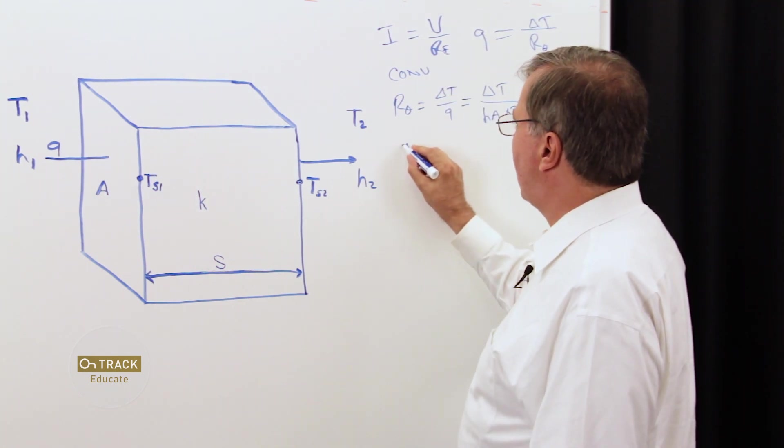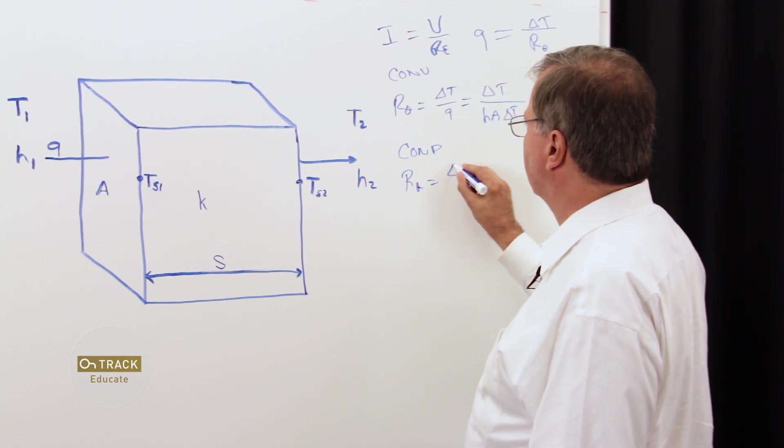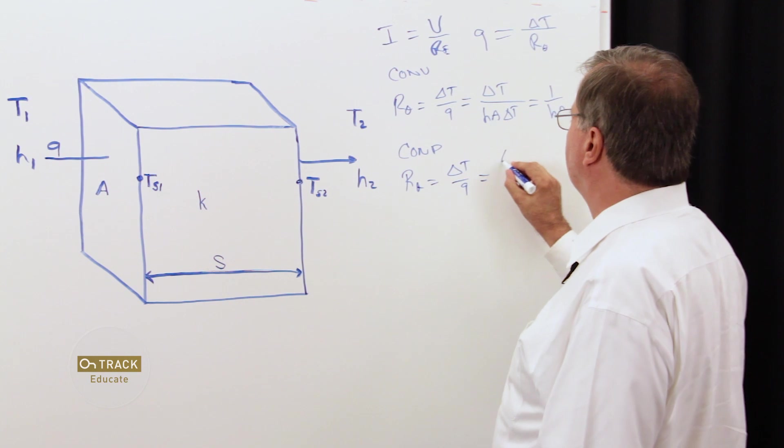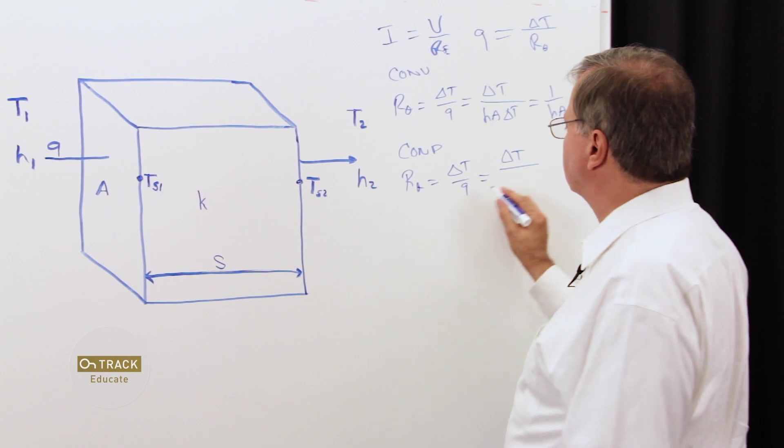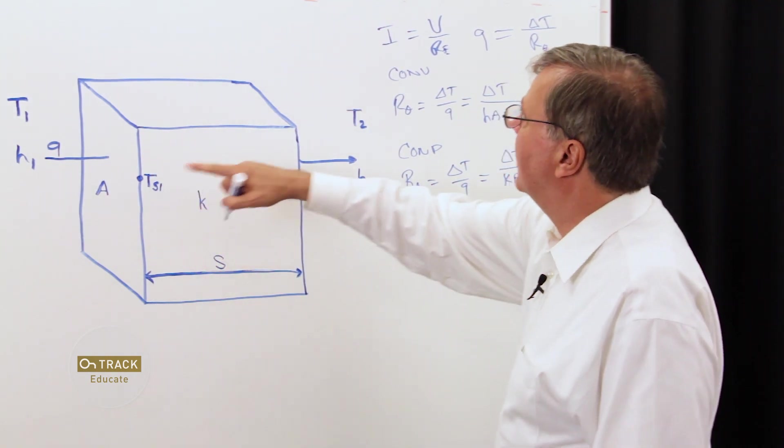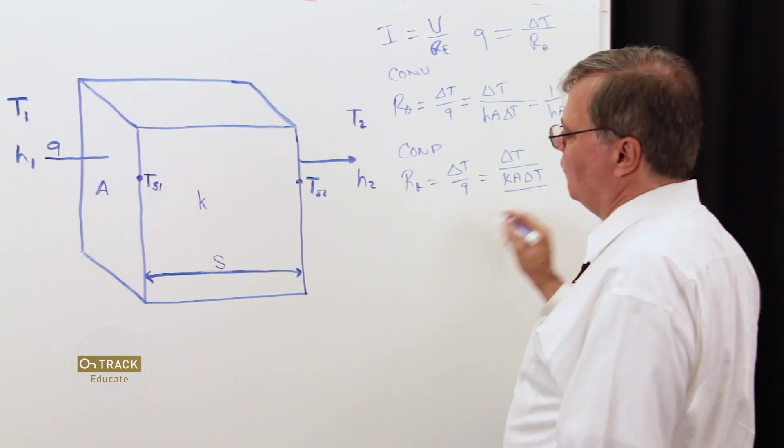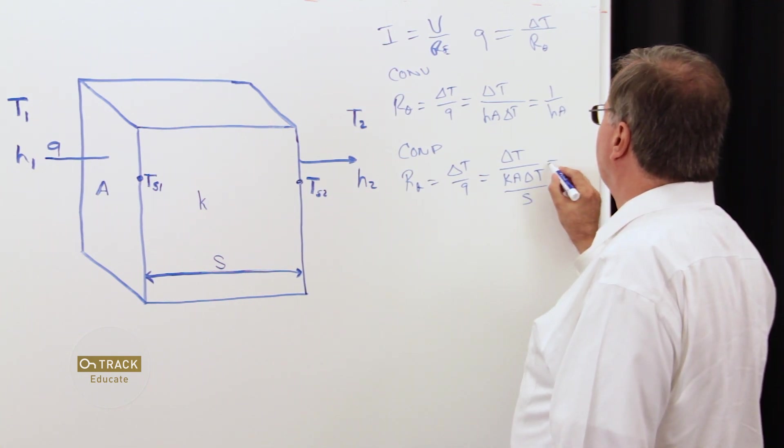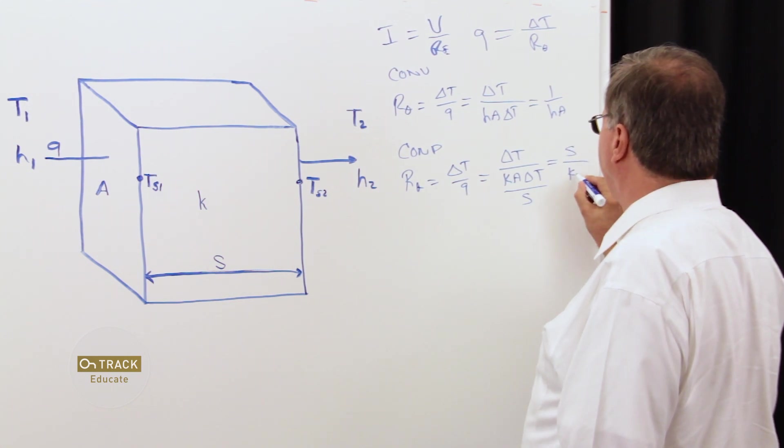Then, for our conduction model, we have R theta is equal to delta T over Q, which is equivalent to delta T over our thermal conductivity of our solid region K, times the surface area A, delta T over the distance traveled through our solid material. And that algebraically reduces to our distance over Ka.